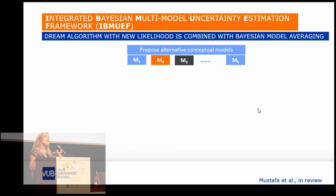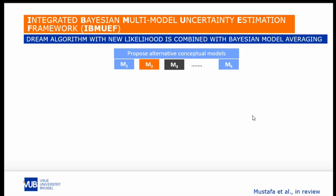Recently, he also extended this methodology to incorporate uncertainty when you have different alternative conceptual models. The training image is a picture of how you think heterogeneity looks like, but there can be uncertainty there too — how these channels, for example, their thickness, how they are oriented, and so on. So instead of just using one training image, we could also use multiple training images to include that type of uncertainty.